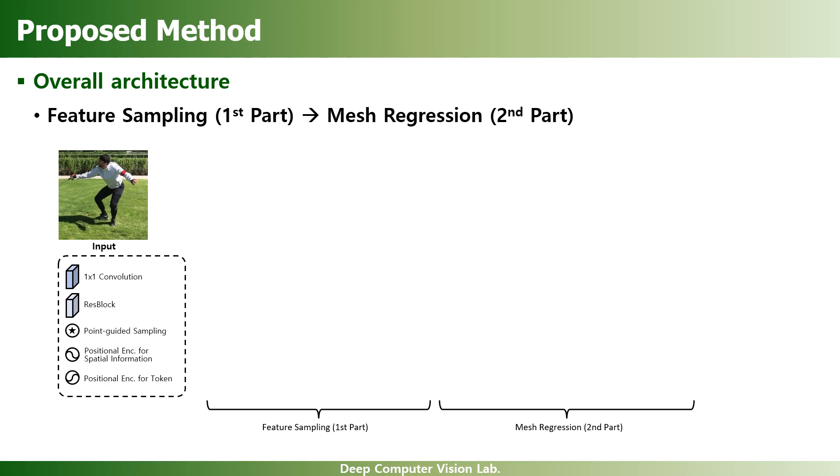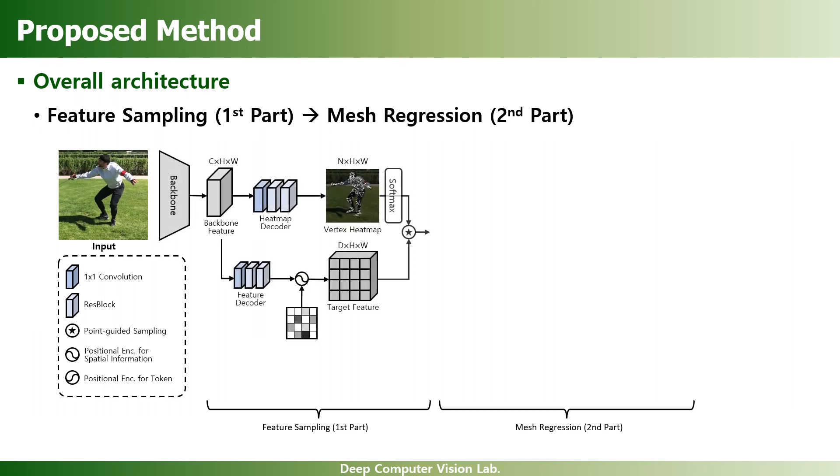Our method consists of two main parts, the feature sampling part and the mesh regression part. In the feature sampling part, vertex-relevant features are extracted based on our point-guided feature sampling scheme and used as the input vertex token of the transformer encoder block. We'll see the details of this scheme in the next slide.